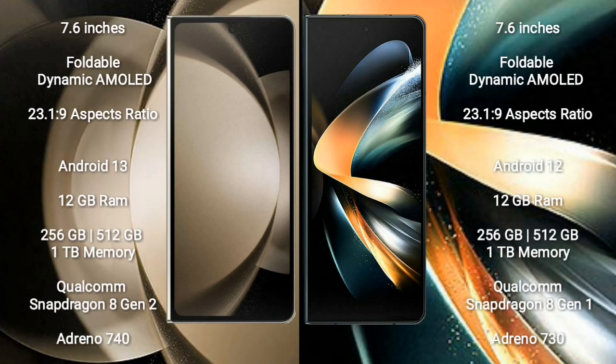Samsung Galaxy Z Fold 5 comes with a 7.6-inch foldable dynamic AMOLED display. Samsung Galaxy Z Fold 4 also comes with a 7.6-inch foldable dynamic AMOLED display. Samsung Galaxy Z Fold 5 runs on the Android 13 operating system, while Samsung Galaxy Z Fold 4 runs on the Android 12 operating system.